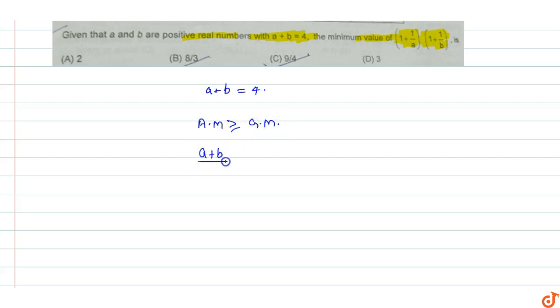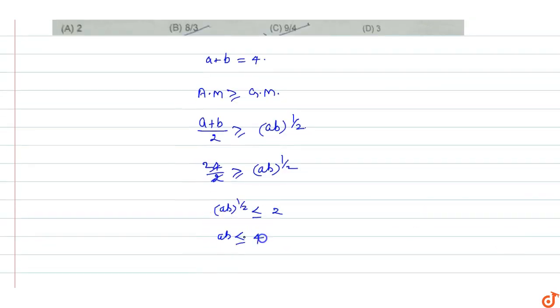(a + b)/2 is greater than or equal to root of ab. Since a plus b equals 4, we have 4/2 is greater than or equals to root ab, so 2 is greater than or equal to root ab. Squaring both sides, ab is less than or equal to 4, so the maximum value of ab equals 4.